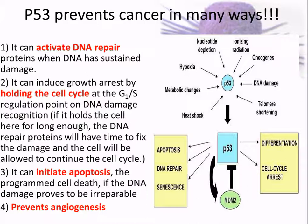Second, P53 holds the cell cycle. Going through the cell cycle — G1, S, G2, then mitotic phases — there's a checkpoint between G1 and S. If you didn't do the job properly, P53 comes out and stops progression through the cell cycle, then acts as a repair mechanism to fix things.